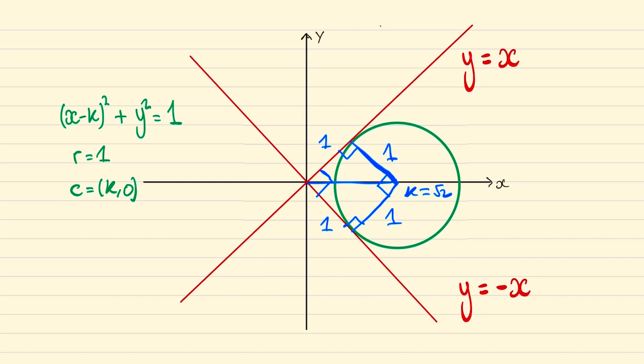And the same will apply on the other side so therefore we have two solutions exactly when k is plus or minus root 2.